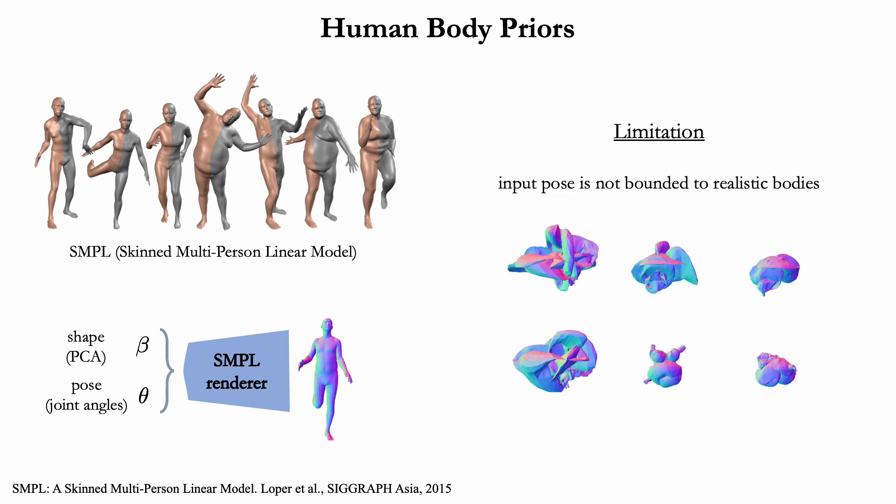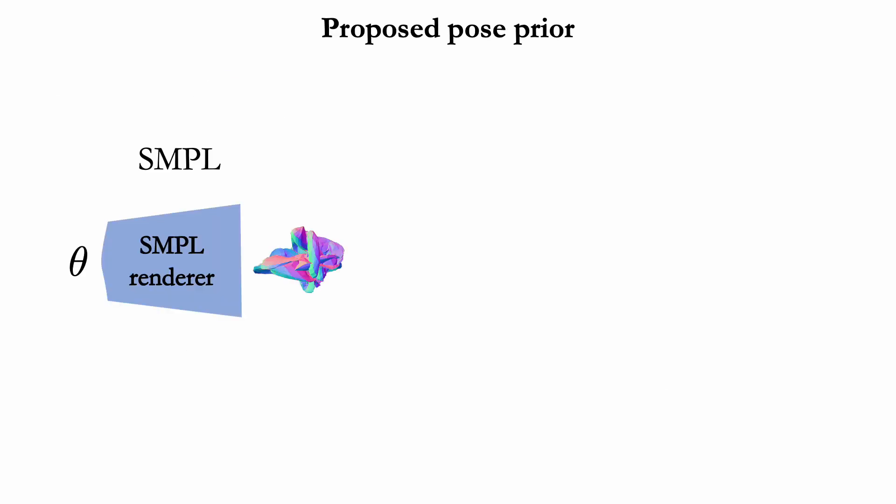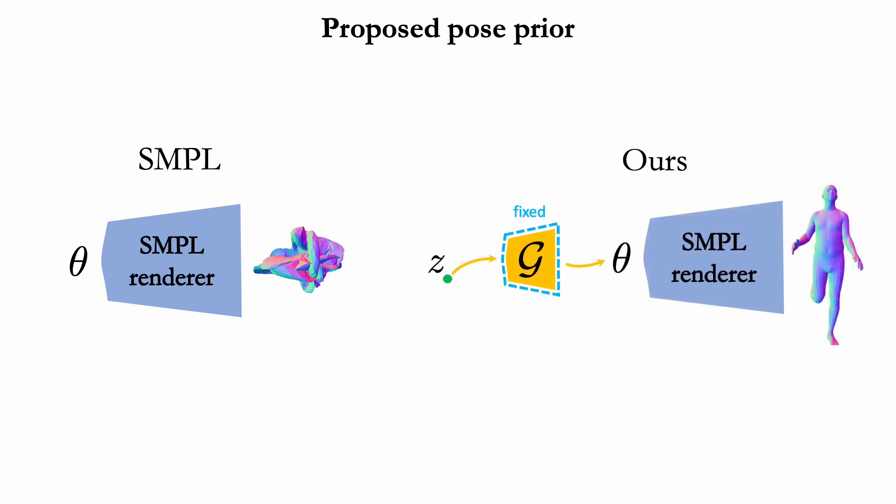However, not all pose and shape values yield physically plausible or even realistic body meshes. So, instead of directly using SMPL pose parameters, we propose to learn a prior that restricts them to values corresponding to realistic poses.